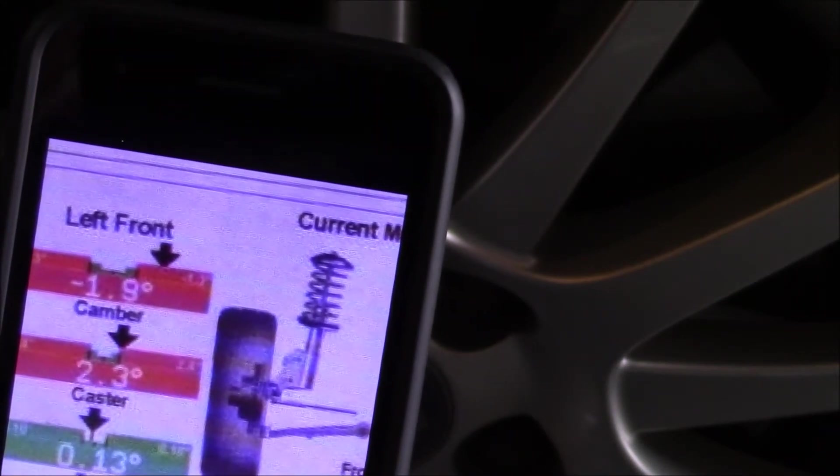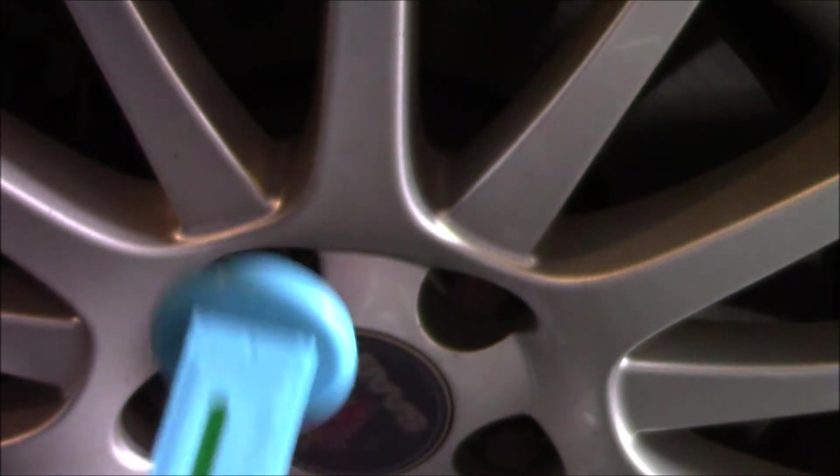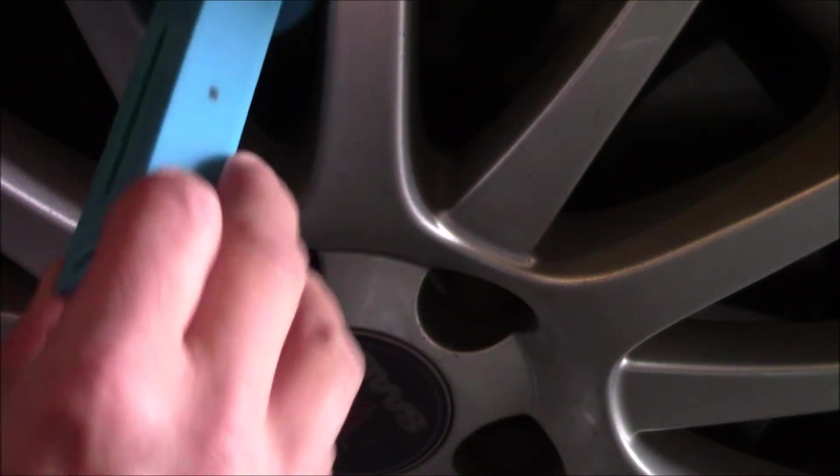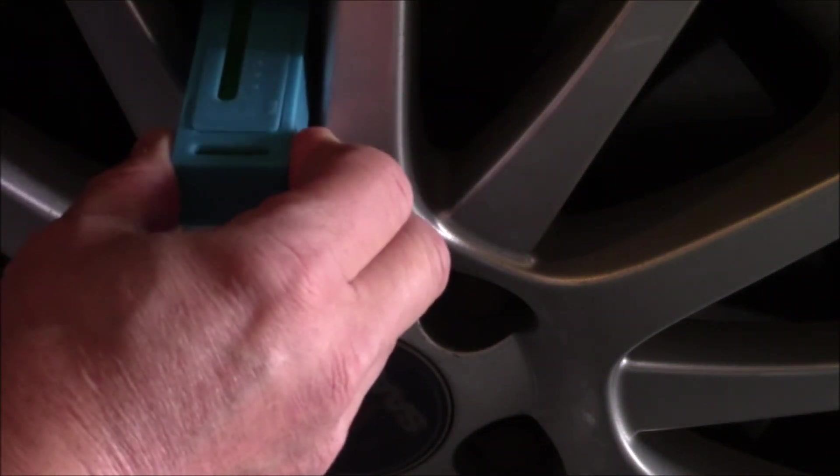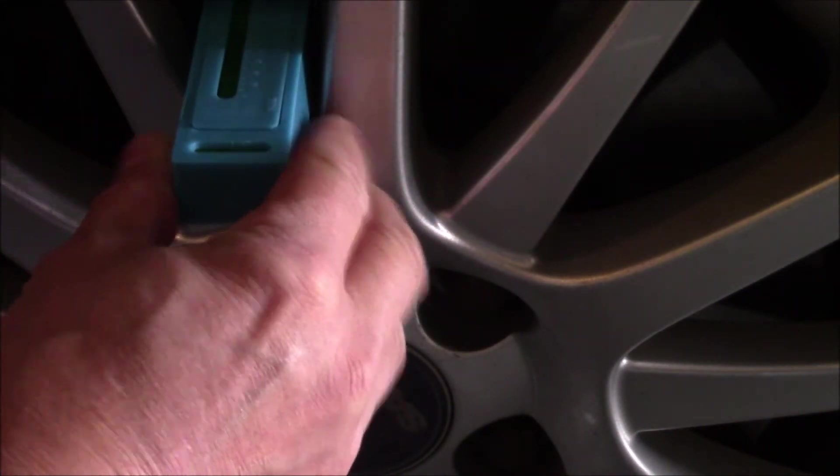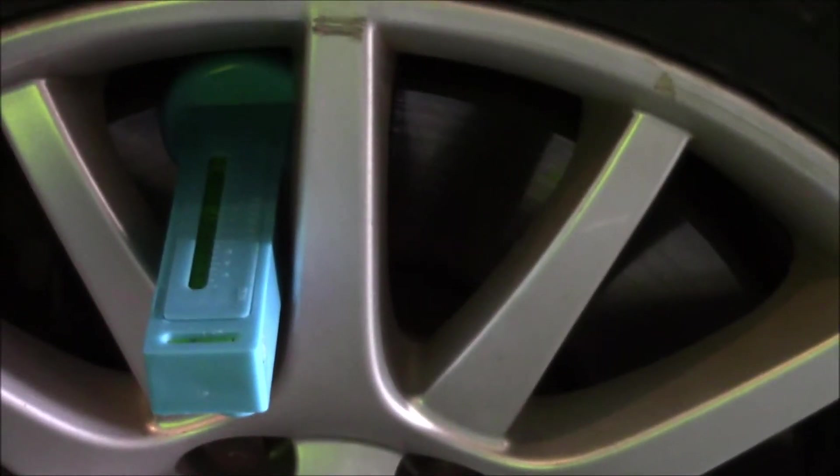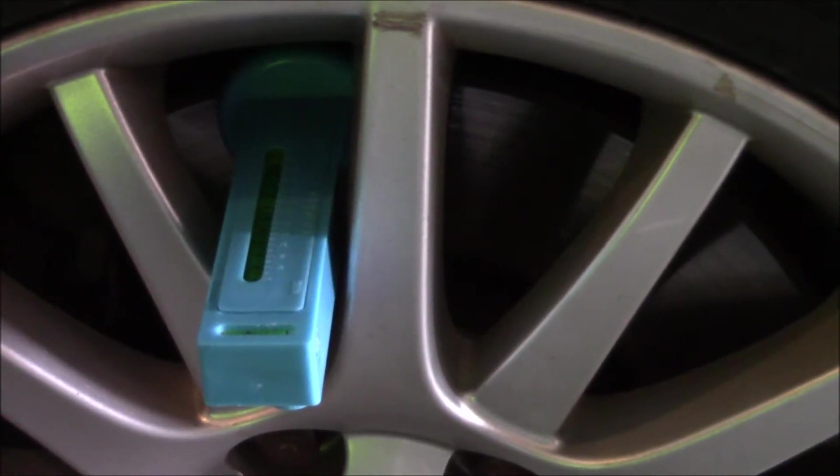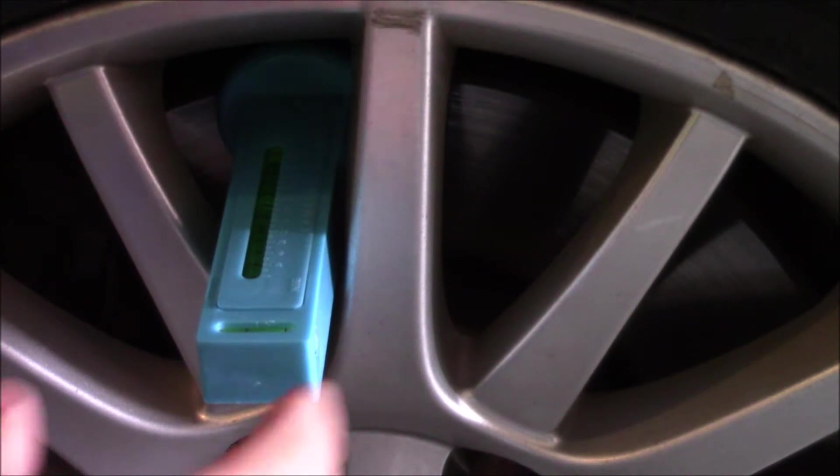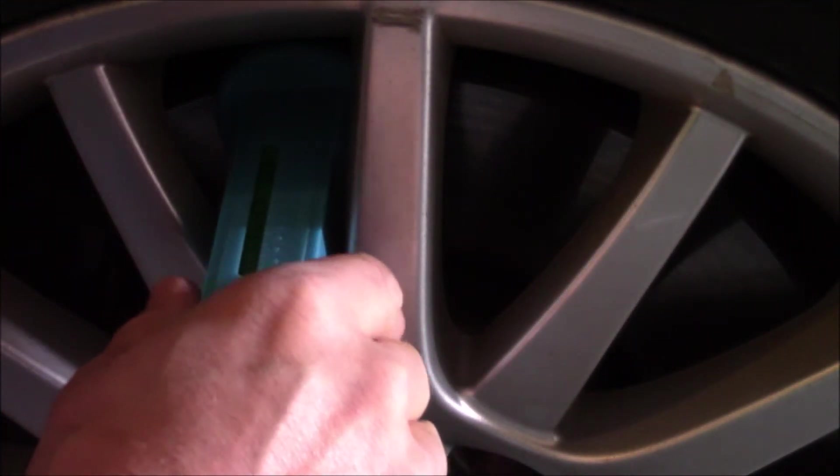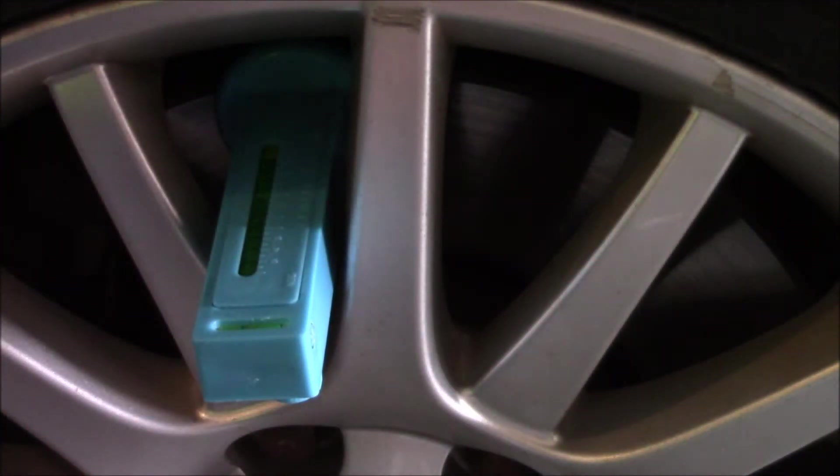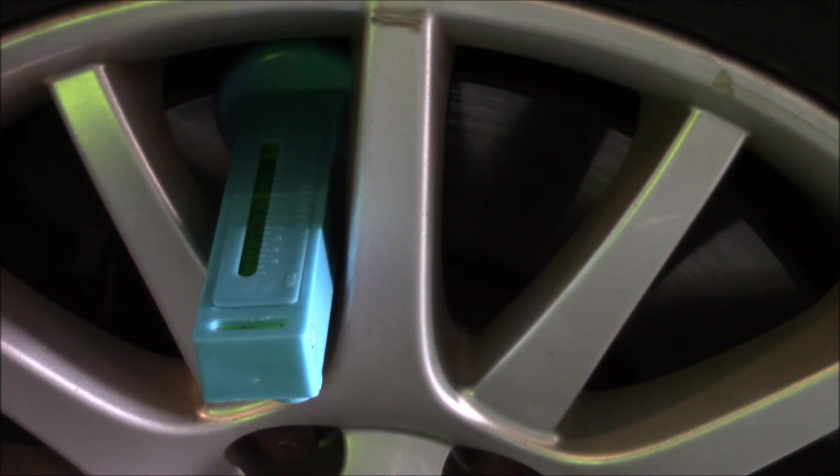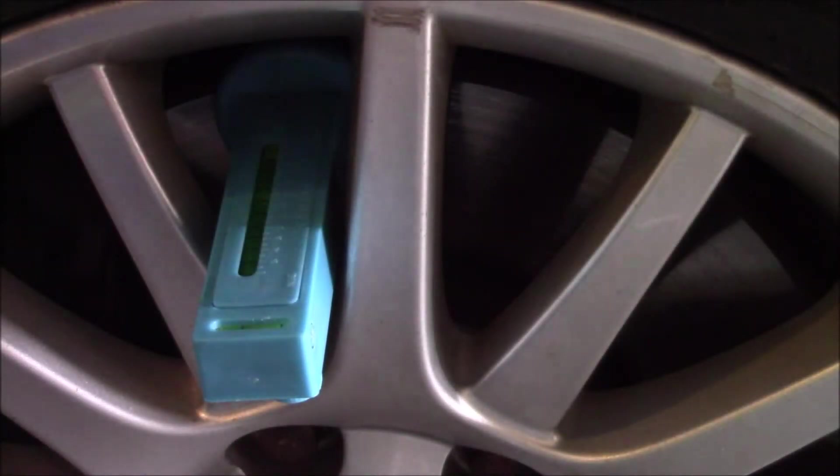This little tool here has a magnet on the back that will go on your brake rotor. There happens to be a little rust ridge on there, so it's not giving me the greatest accuracy. Since I already know that I need to change it accordingly, I'm going to put the parking brake on.